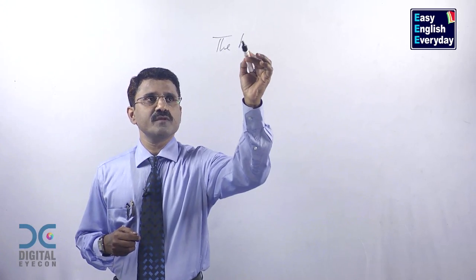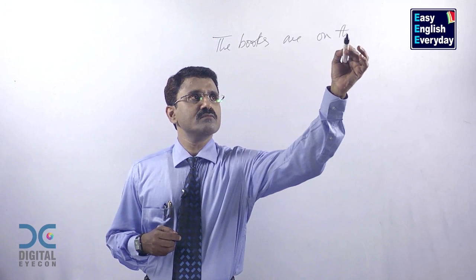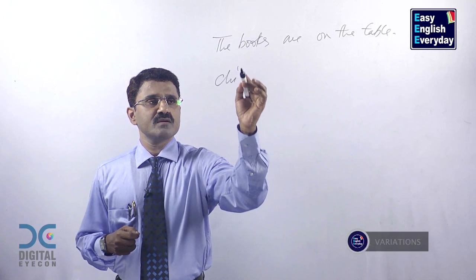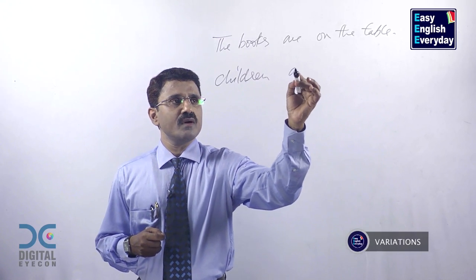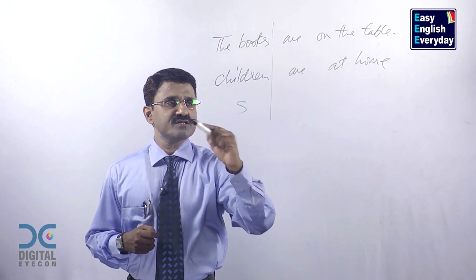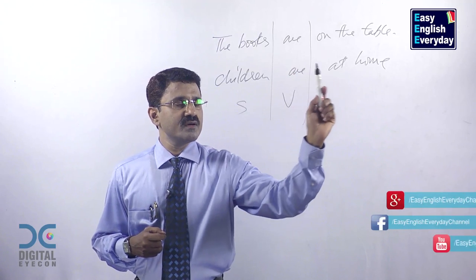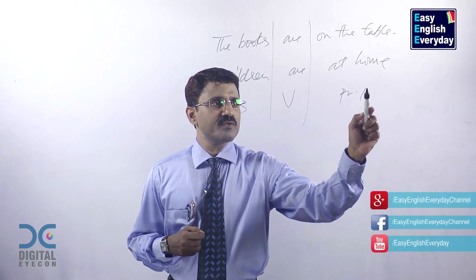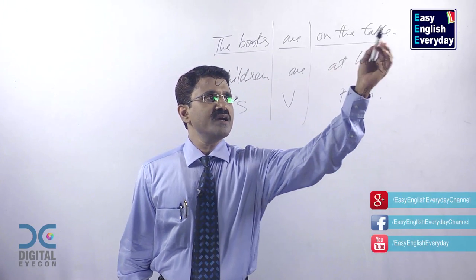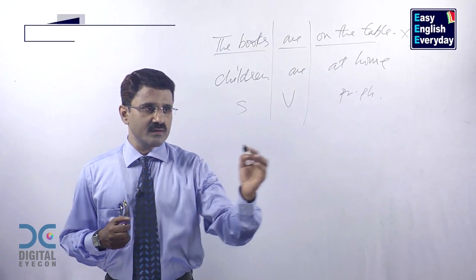Look at these sentences. The books are on the table. Children are at home. This is the subject, this is the verb, and this is the prepositional phrase. The books are on the table — four different ways: The books are on the table.